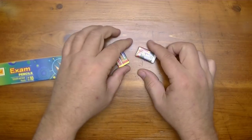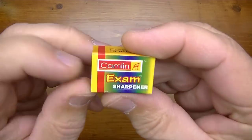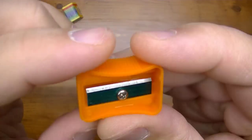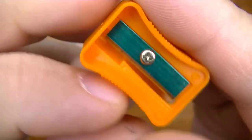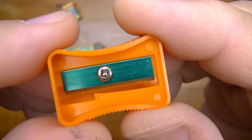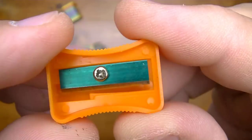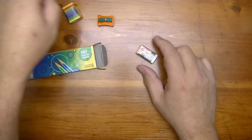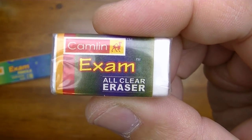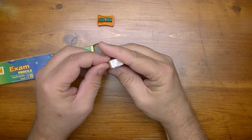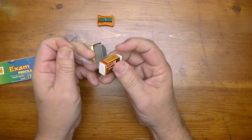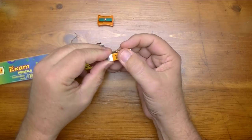First things out of the box are the Exam Sharpener. We'll give that a try in a moment. Looks like a standard sharpener. And we have the Exam All Clear Eraser. And we will give this a shot shortly as well.